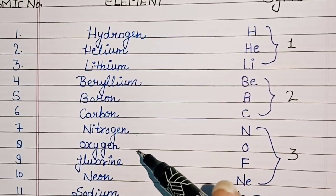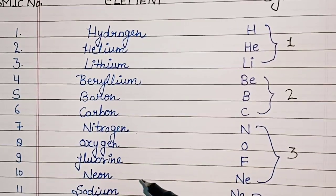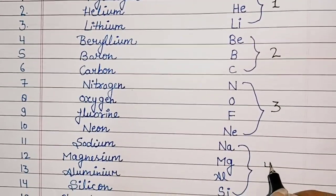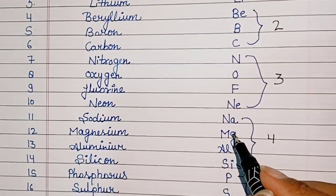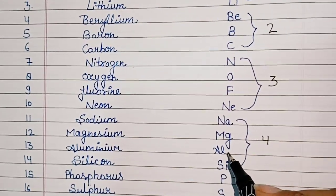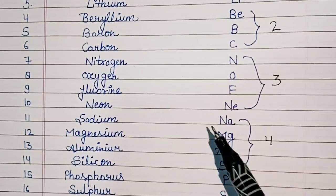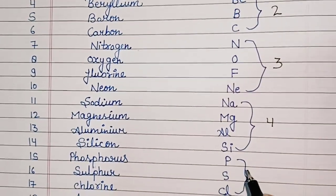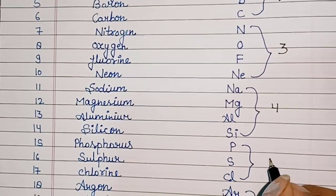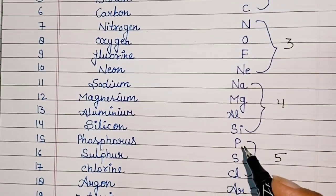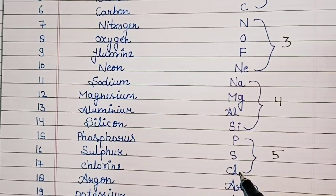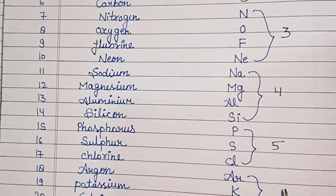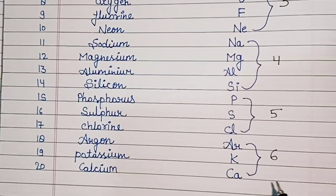The fourth slot is 'na maang al si' — Sodium, Magnesium, Aluminium, Silicon. The fifth slot is 'fir se kli' — Phosphorus, Sulfur, Chlorine.